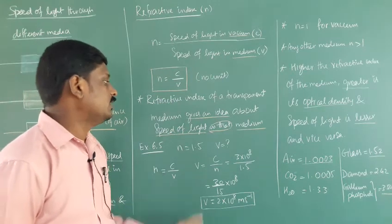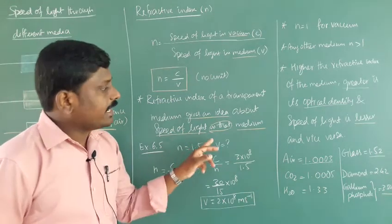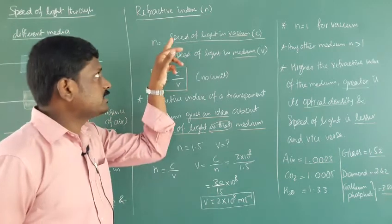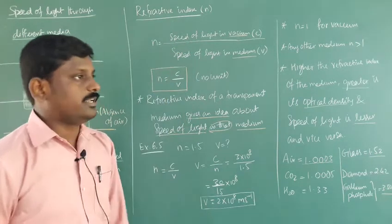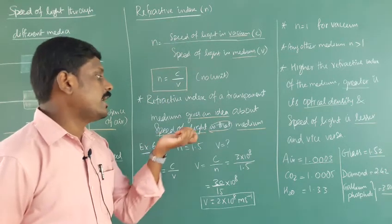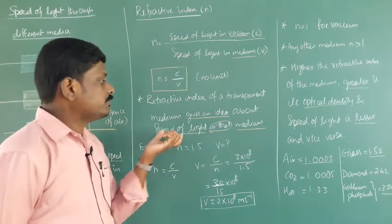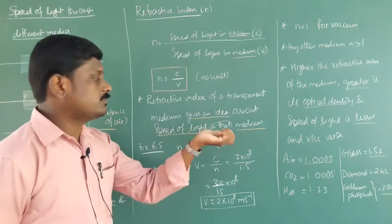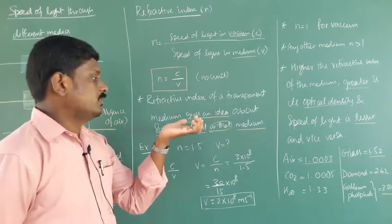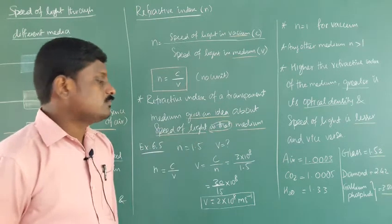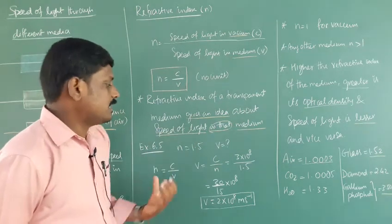The refractive index gives an idea about the speed of light in that medium. The refractive index of a transparent medium is a value that tells us how much speed the light travels at in that medium.